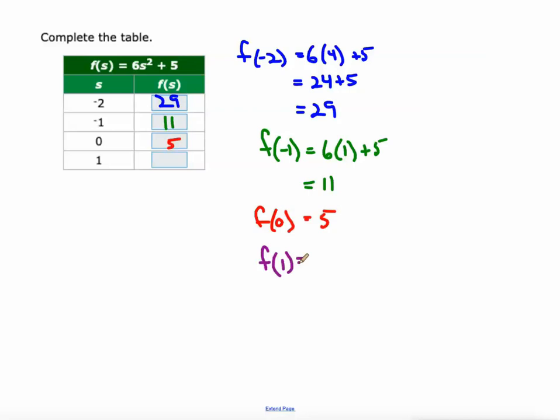And so a lot of mental math on that one. 0's are easy to plug in, so are 1's. 6 times 1 squared is 6 plus the 5. That's 11.